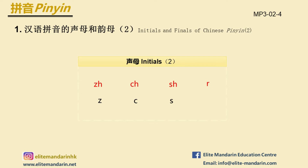Initials two: 知 (zh), 吃 (ch), 虚 (sh), 日 (r). 知 is similar to J in job. 吃 is similar to CH in chair. 虚 is similar to SH in fish. 日 is similar to R in rain. But please pay attention to the pronunciation of these four initials.